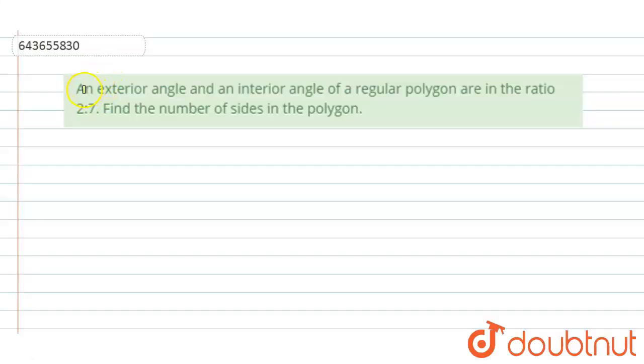Hi, welcome to this video. The question is: an exterior angle and an interior angle of a regular polygon are in the ratio 2 is to 7. Find the number of sides in the polygon.